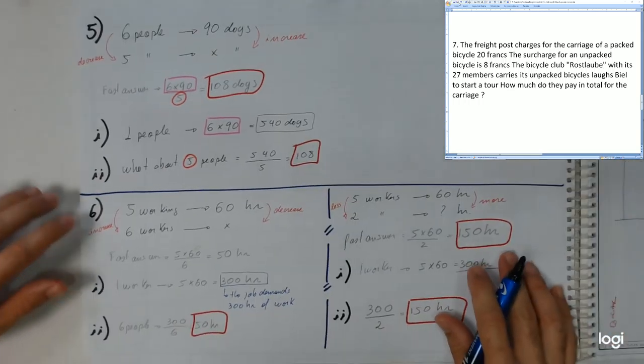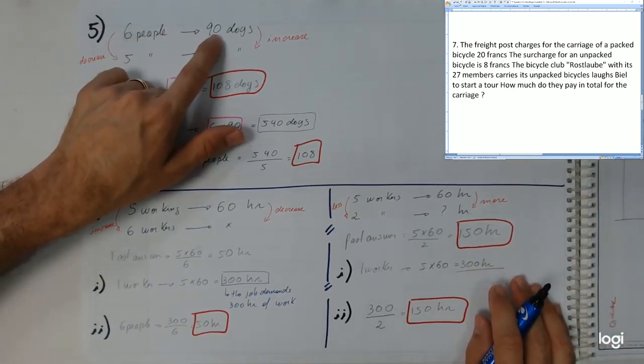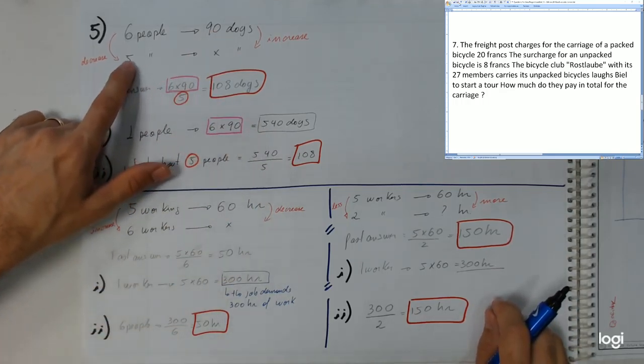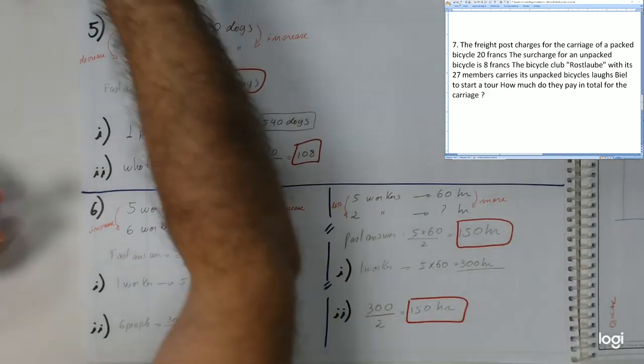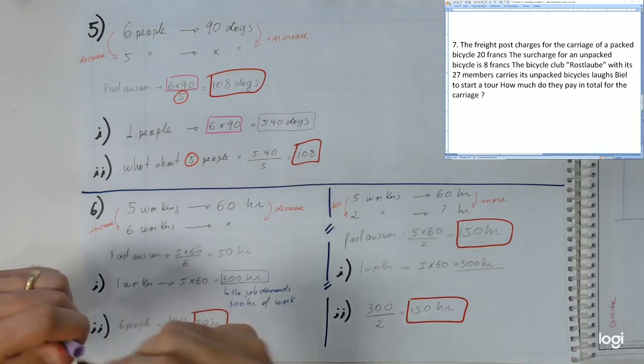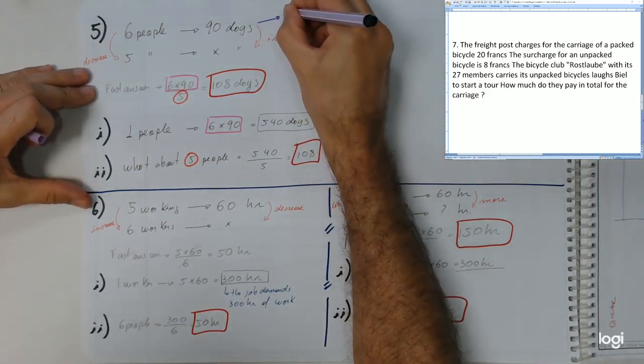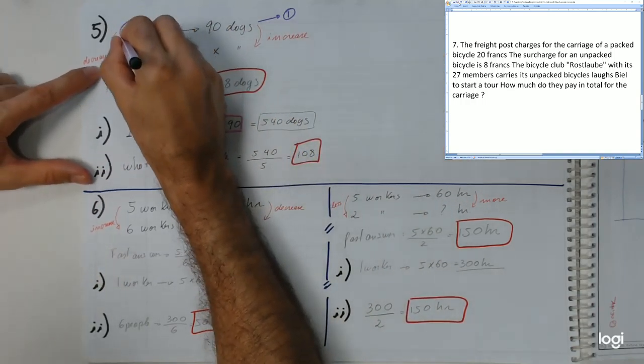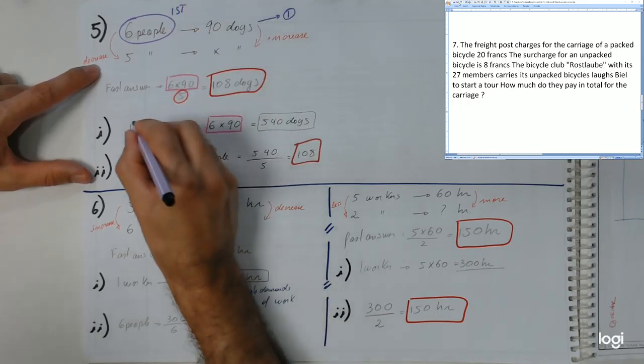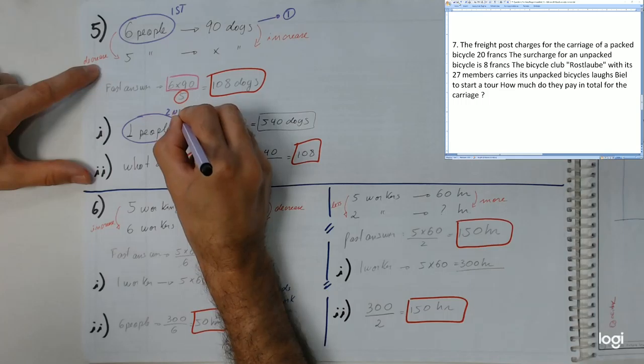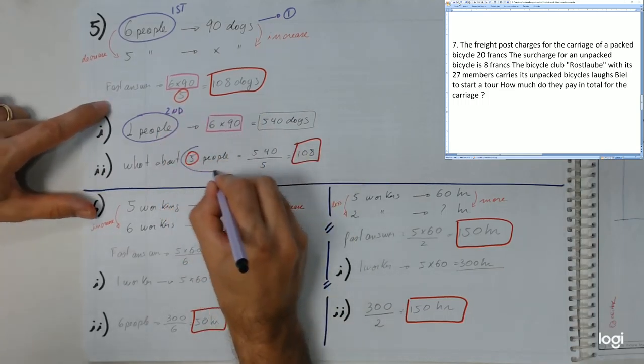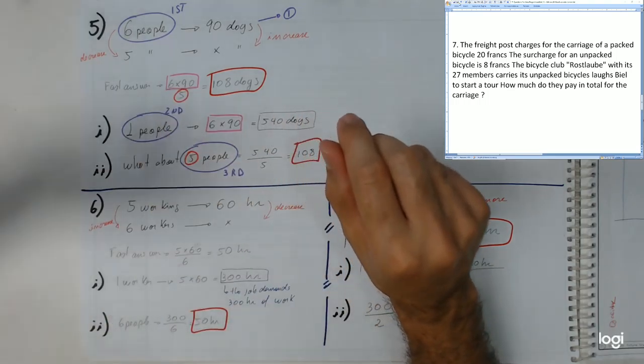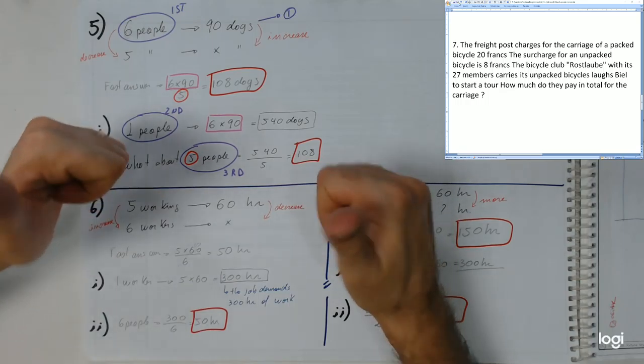For example, in this part here it's interesting to see six people, nine days; one person, 540. Then five people - it is this. You see, this is if you were to put this in steps. I would say that this would be the first step. Then the one person - the six people let's put like this - the six people would be the first step, one person would be the second step, and then the five people would be the third step.